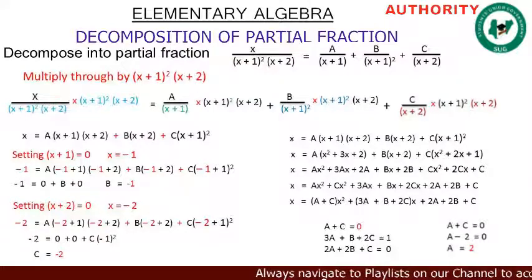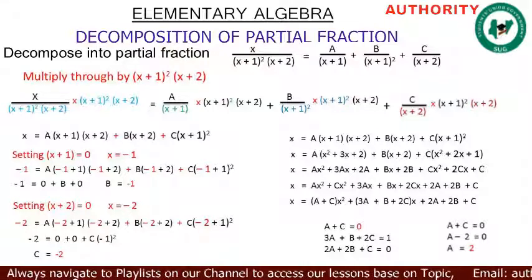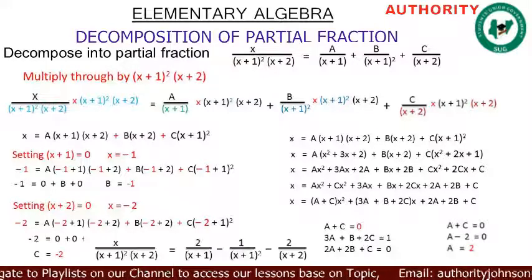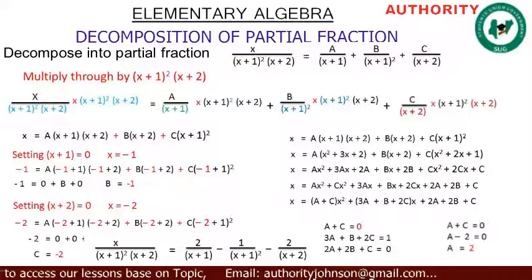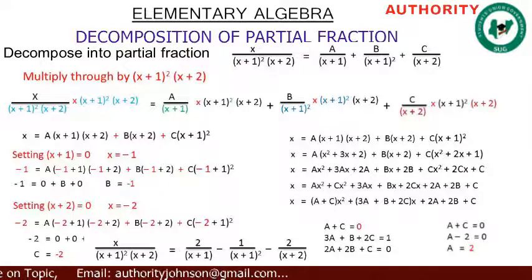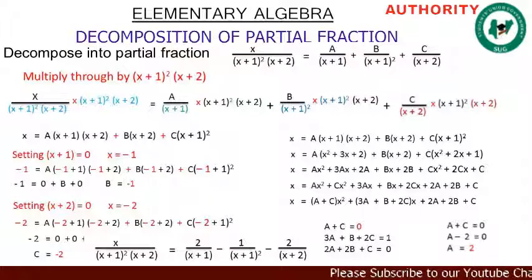So we have found a = 2, b = -1, c = -2. Substituting back into the original decomposition: x over (x+1)²(x+2) = 2/(x+1) − 1/(x+1)² − 2/(x+2). Thank you very much — please let's take more examples for better understanding.